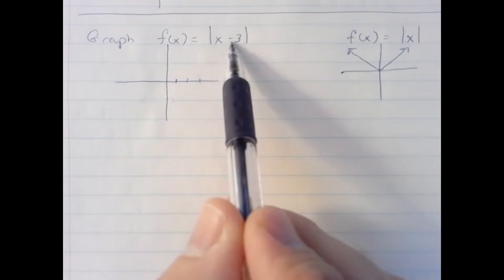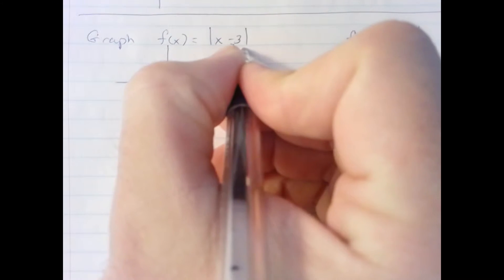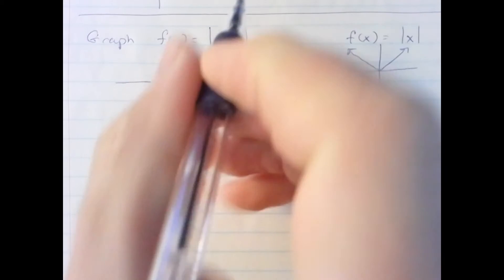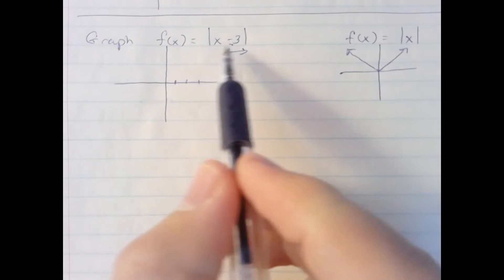The minus 3 tells us what kind of shift we have. It's going to be horizontal since it's in the input of the function.